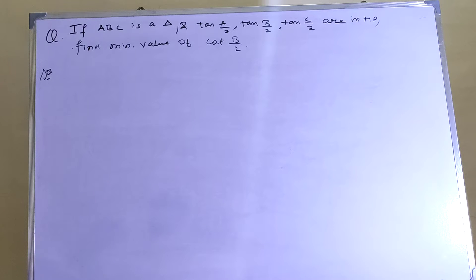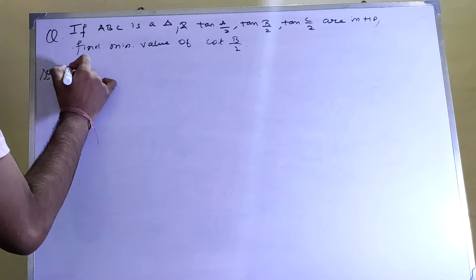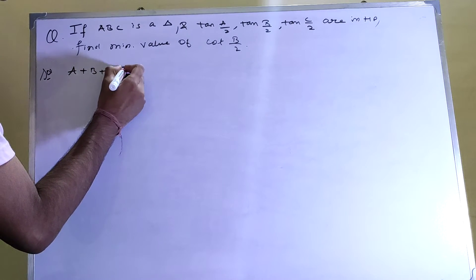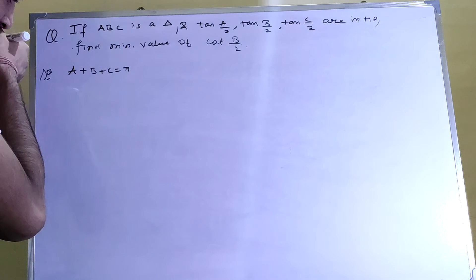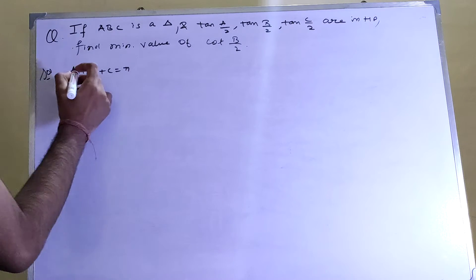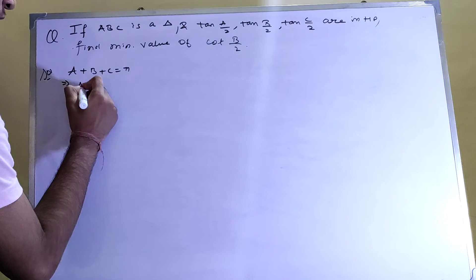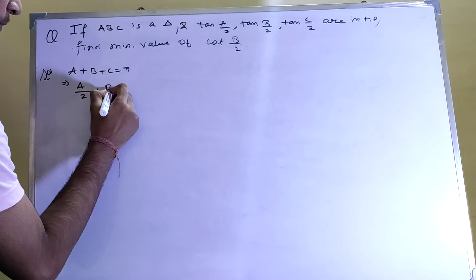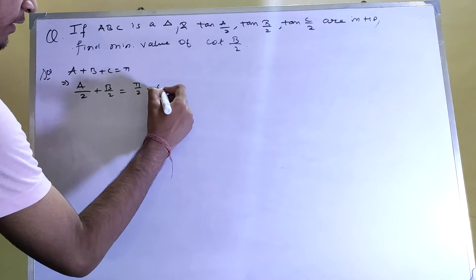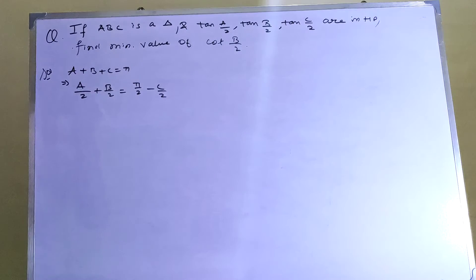Given that A + B + C = π, dividing both sides by 2 gives A/2 + B/2 = π/2 − C/2. Now we take cot of both sides.